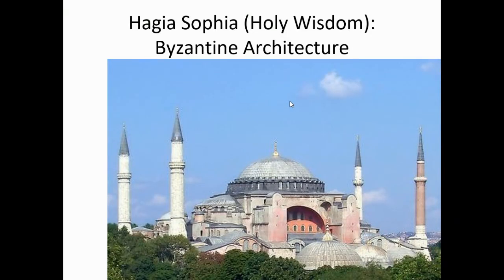Moving on to Byzantine architecture, around the year 580 CE. This is the building built under the emperor Justinian known as Hagia Sophia, or the Church of Holy Wisdom. It has now been converted into an Islamic mosque, and you can see the four minarets — the towers from which the muezzin calls for prayers. Hagia Sophia is in Istanbul, which previously had been known as Constantinople, named by the emperor Constantine around the year 320 AD.